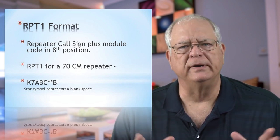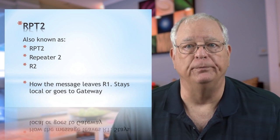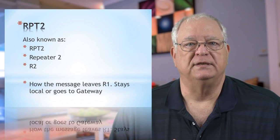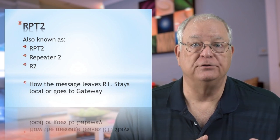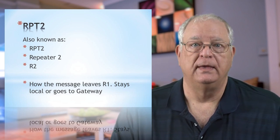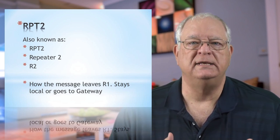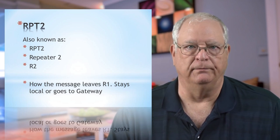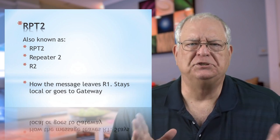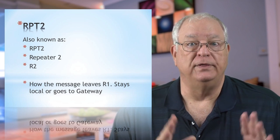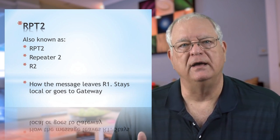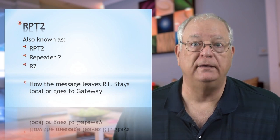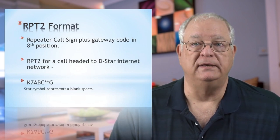Element 3 is RPT2. As with RPT1, you'll also see this listed as REPEATER2 and R2. This element tells the DSTAR system where to send your transmission. There are only really two choices: one is to the internet gateway, and the other is to keep it only on the local repeater.